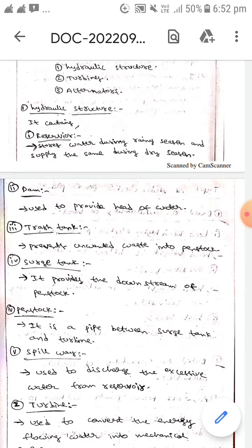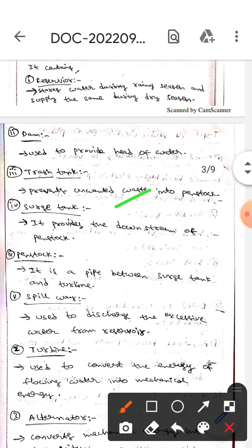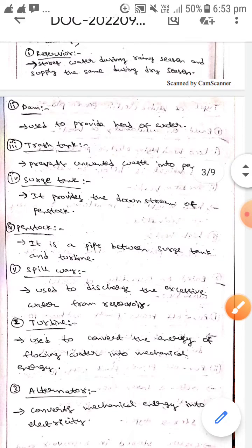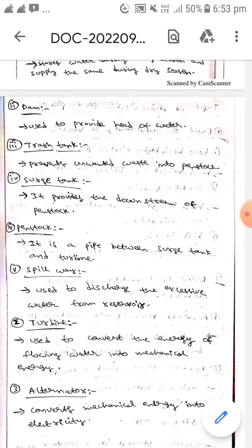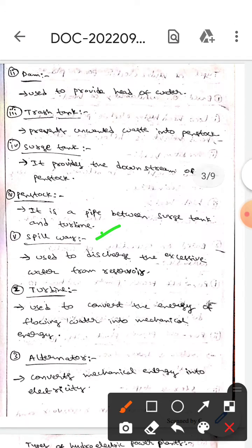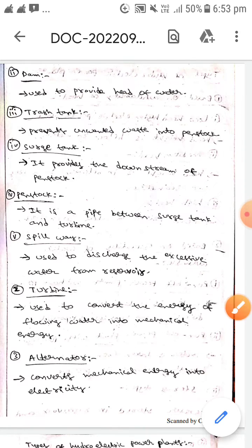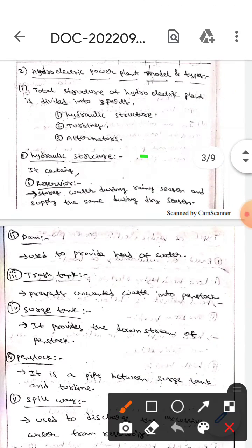The next one is the surge tank, which provides downstream flow to the penstock. The penstock is a pipe between the surge tank and turbine. The spillway is used to discharge excess water from the reservoir. These are all hydraulic structures.